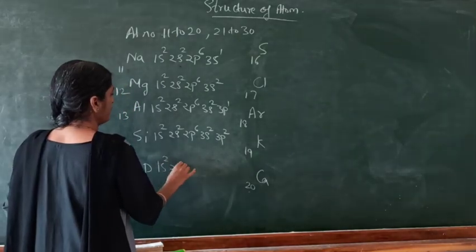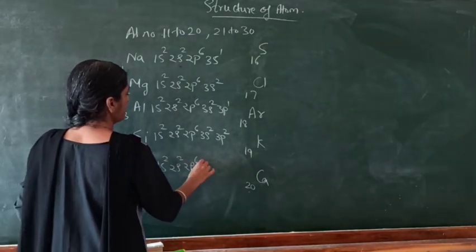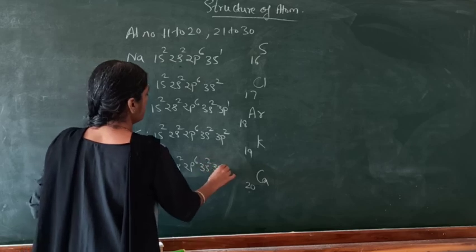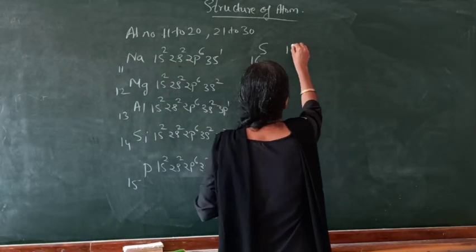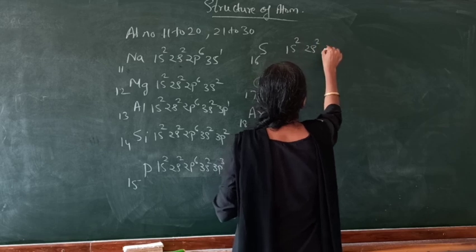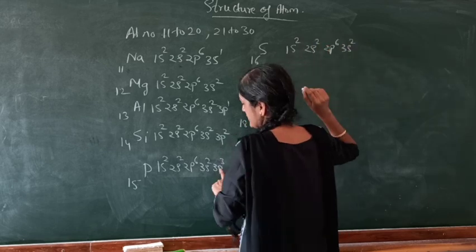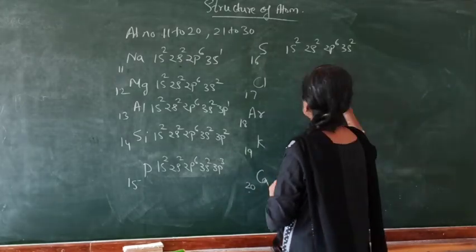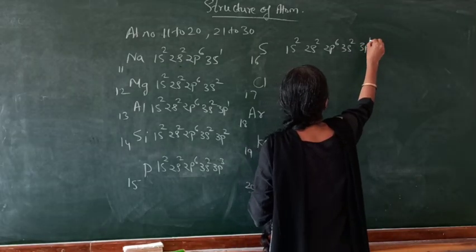Next, phosphorus: 1s², 2s², 2p⁶, 3s², 3p³. Next, sulfur: 1s², 2s², 2p⁶, 3s². I have told you the capacity of p orbitals is 6 electrons. So 3s², 3p⁴.